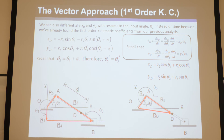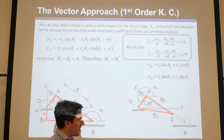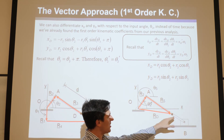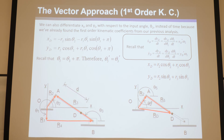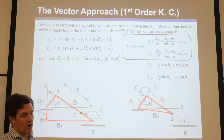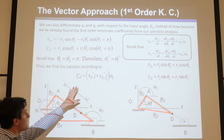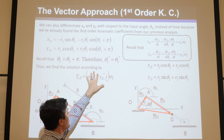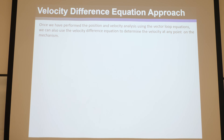The recommended method: complete position and velocity analysis, then use vectors you already know to point to the point of interest on the mechanism. Break those into component form, take the derivative with respect to the input variable (not with respect to time), then multiply by the input angular velocity — omega_2, or v_4 if that's the input. The final velocity of point D is then its x and y first-order kinematic coefficient components times omega_2.